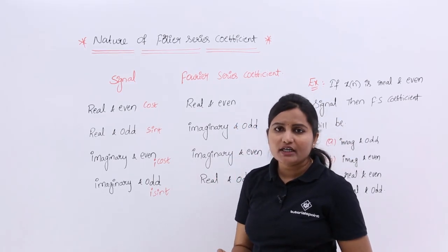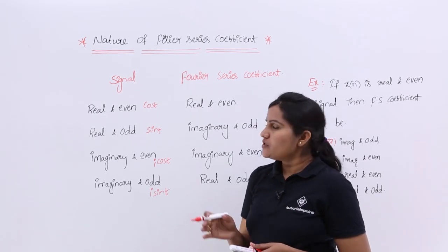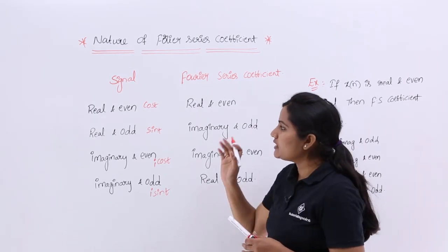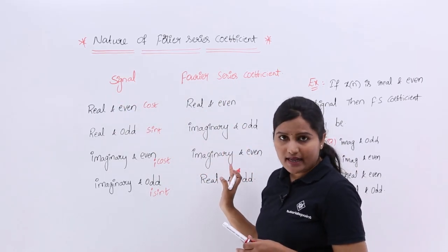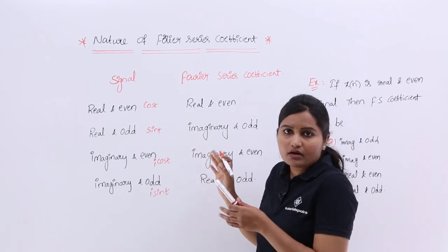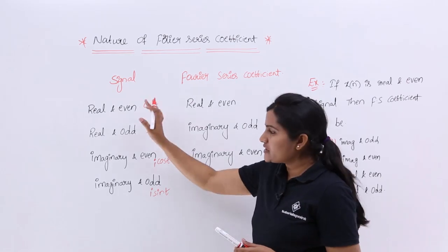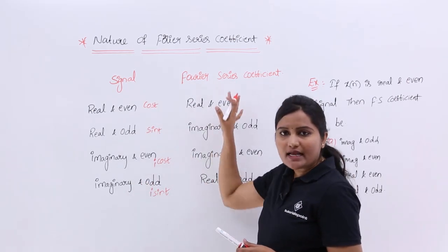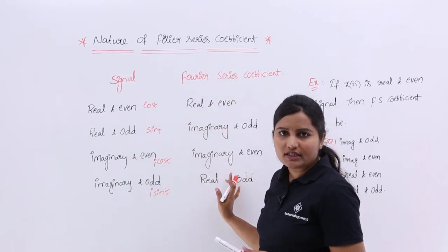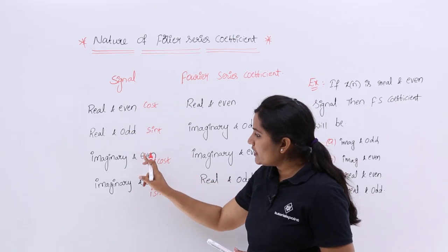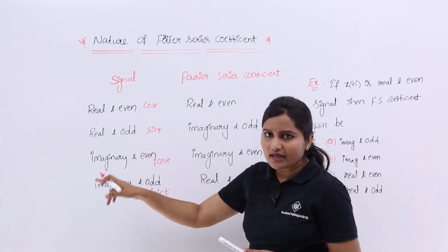This is a very important theory. You will get questions on this many times in GATE or any other technical exams related to signals and systems. They will ask what is the nature of the Fourier series coefficient or Fourier transform — this theory can be applied for Fourier transforms also. Whenever you see 'odd', it changes imaginary to real or real to imaginary.